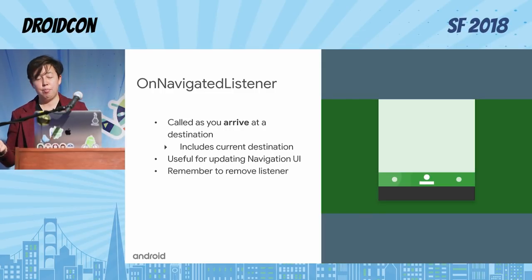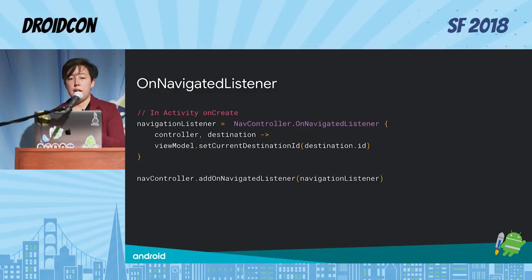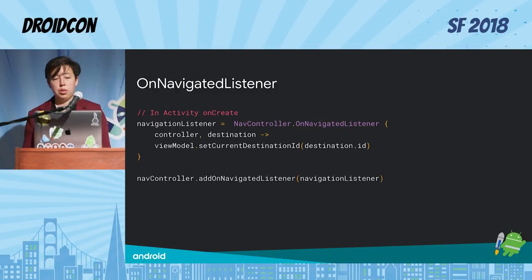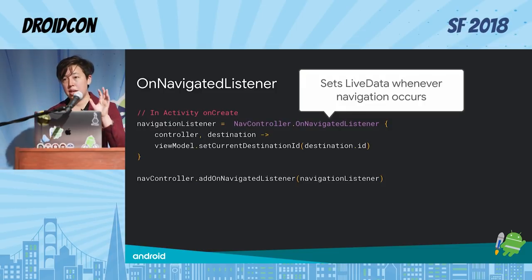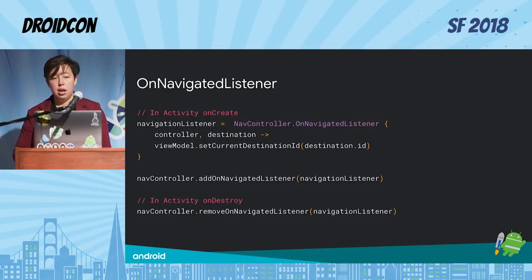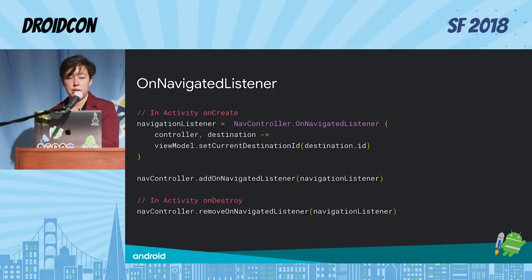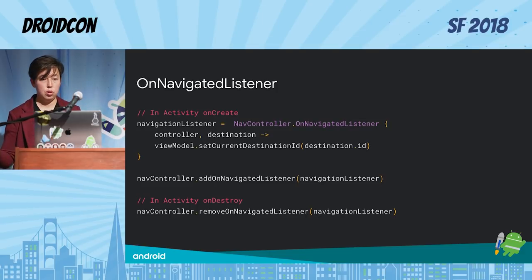Remember to remove your listener. In code, to make a navigation listener you construct it — this one takes the view model and updates the live data that stores the current destination — then add it to the nav controller, and of course also remove it from the nav controller when done.